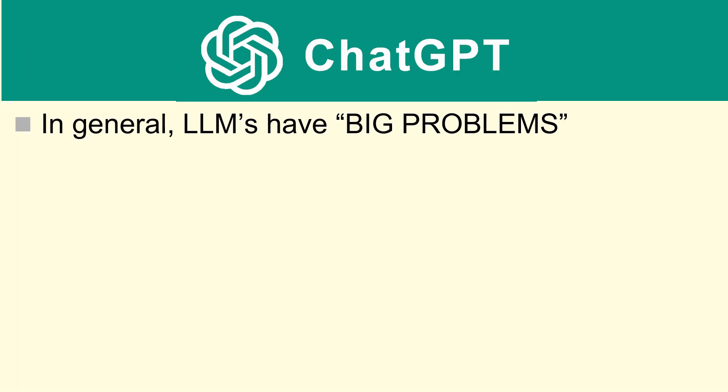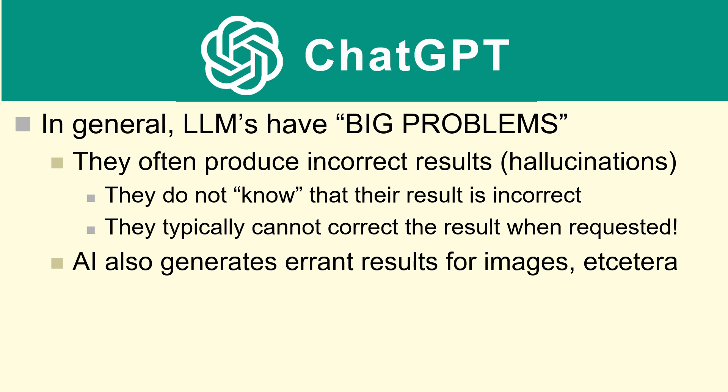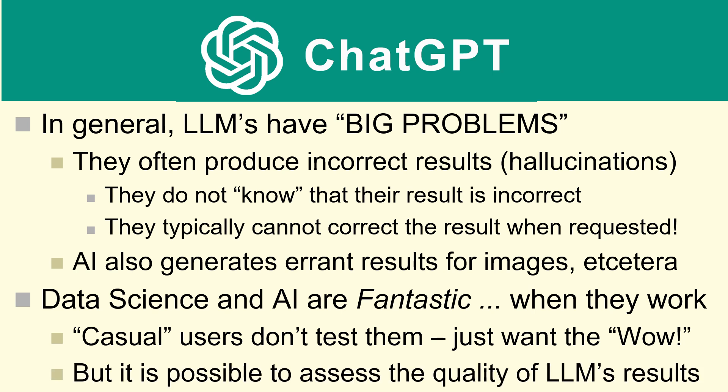So in general, large language models have big problems. They produce incorrect results, which are often called hallucinations. They don't know their result is incorrect. They typically cannot correct the result when requested. AI also generates errant results for images and other types of models. So data science and AI are fantastic when they work. Casual users don't test them - they just want the wow. But it is possible to assess the quality of large language models and use them productively even though they sometimes make mistakes.